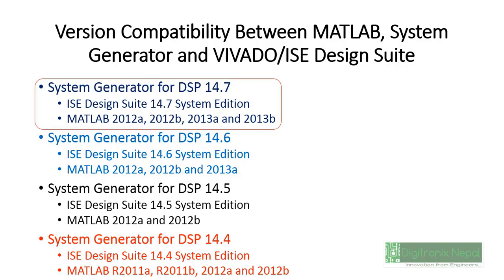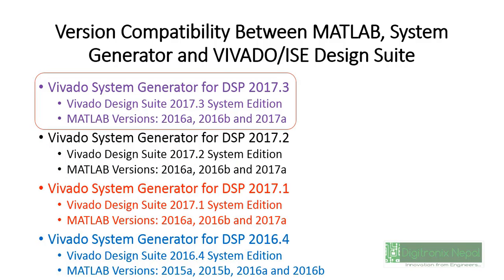This list is taken from Xilinx answer records, so you can also follow those answer records or notes — we will show you the link. If you have ISE design suite 14.7, you can use these four MATLAB versions: 2012a, 2012b, 2013a, 2013b. If you have a different version of ISE, follow the corresponding MATLAB Simulink version. Now let's move to Vivado design suite.